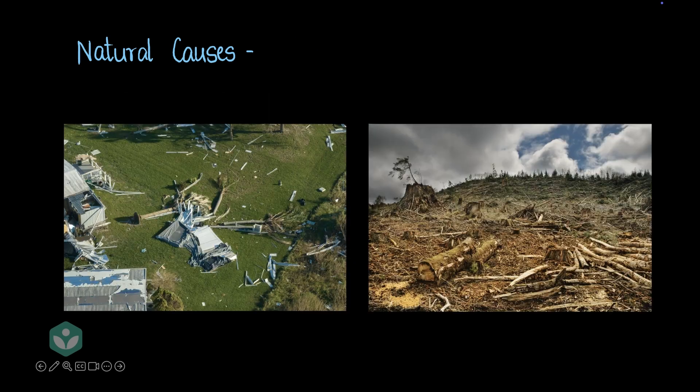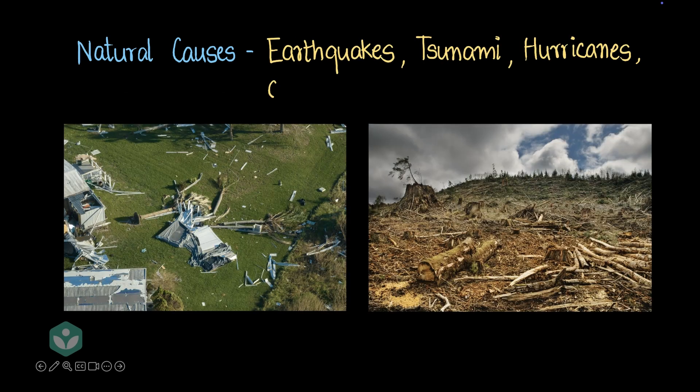The last natural causes we'll discuss are earthquakes, tsunamis, hurricanes, and cyclones. All of these disasters can damage crops, leave people homeless and jobless, and all of those conditions put together can often cause a shortage of food.